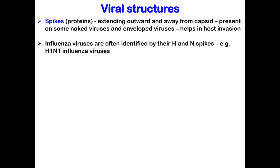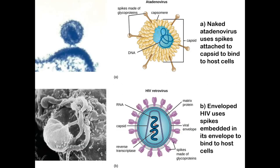Influenza viruses are often identified by their H and N spikes, for example H1N1 flu viruses. You can see examples of these spikes on the slide. At the top we have the adenovirus, which is a naked virus, so it doesn't have a lipid envelope. The spikes are attached directly to the capsid, and these spikes bind the adenovirus to host cells.